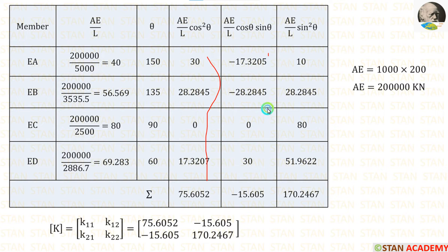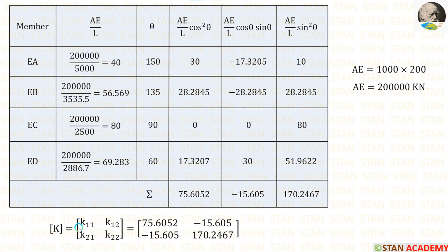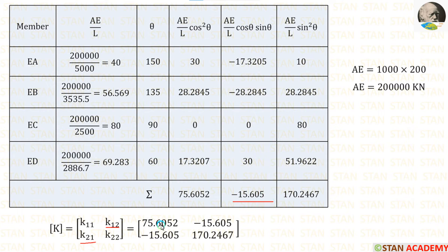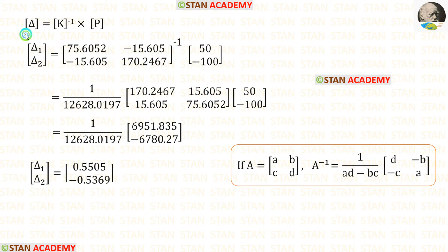Then let us add the values and find the summations. From the stiffness matrix formula: K11 equals the summation of AE/L·cos²θ; K12 and K21 equal the summation of AE/L·cosθ·sinθ; and K22 equals the summation of AE/L·sin²θ. Using these summations we have now calculated the K matrix.